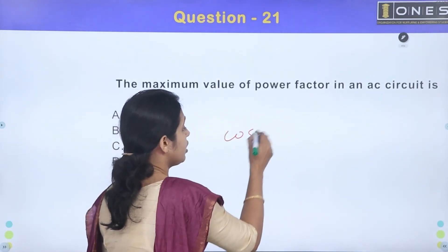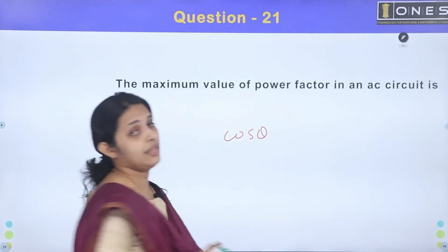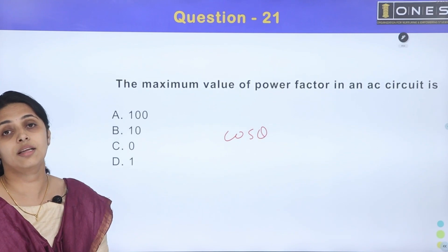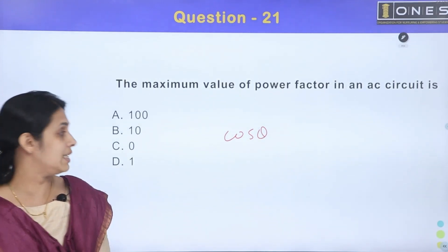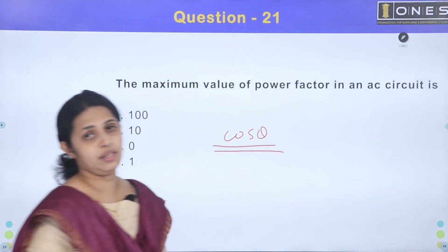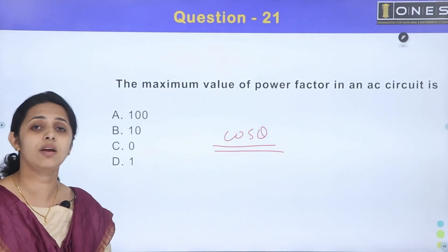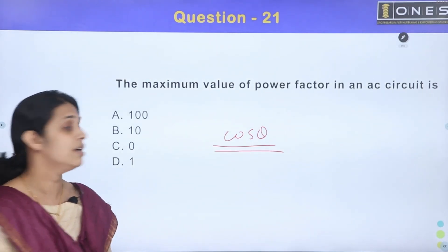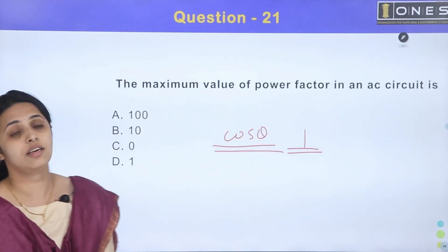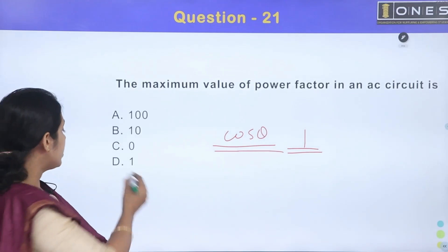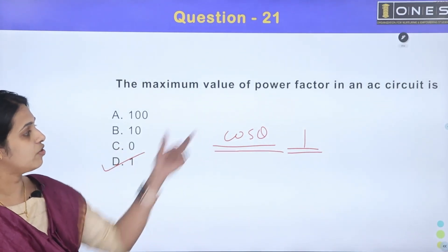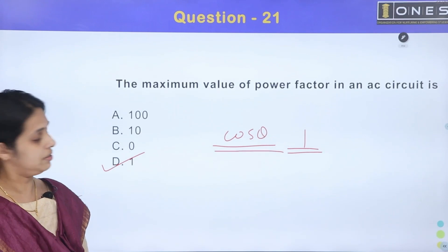The power factor represents cos theta — the cosine of the angle between voltage and current. The maximum value of the cosine function is 1. So the maximum value of power factor in an AC circuit is 1.